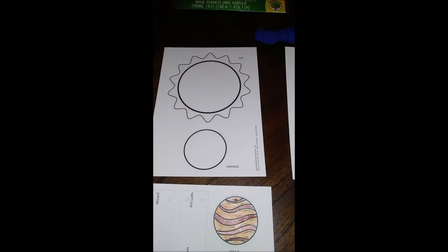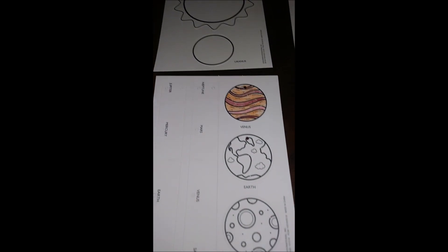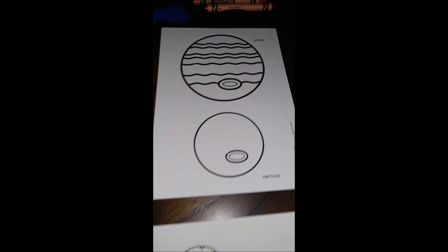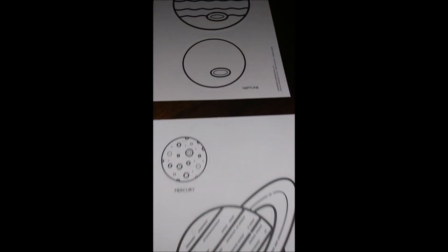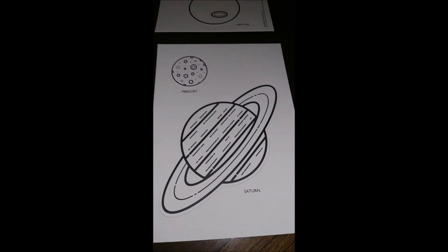We have the sun, Uranus over here, Venus, Earth, and Mars, Jupiter, Neptune, Mercury, and Saturn. Be right back while I color these.